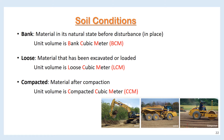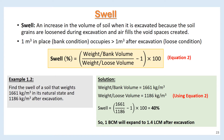The loose is material that has been excavated or loaded, called loose cubic meter, LCM. The compacted is material after compaction, called compacted cubic meter, CCM. Swell is an increase in the volume of soil when it is excavated because the soil grains are loosened during excavation and air fills the void spaces created. As a result, the unit volume of soil in the bank condition will occupy more than one unit volume after excavation. Swell may be calculated using equation 2.